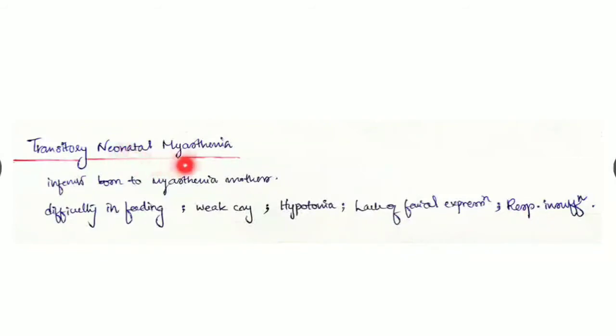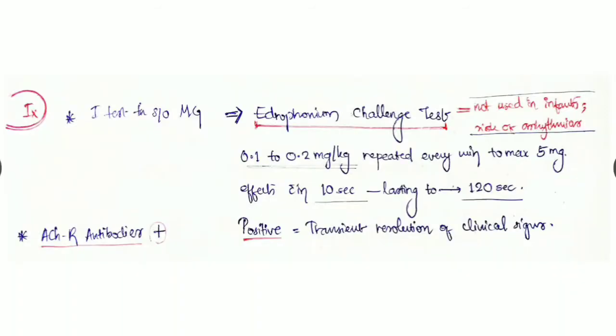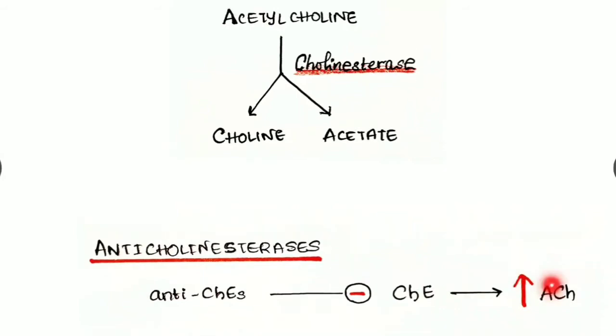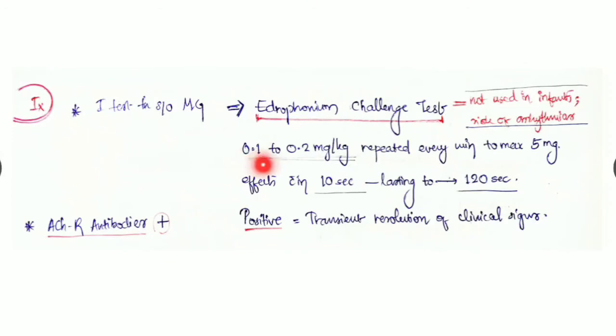The first test if we're suspicious of myasthenia gravis is the edrophonium challenge test. Edrophonium is an anticholinesterase that inhibits the cholinesterase enzyme and increases the concentration of acetylcholine neurotransmitter.